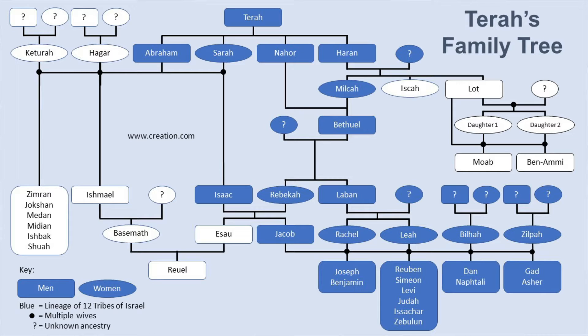Looking at the sons: Leah gives birth to Reuben, Simeon, Levi, Judah, Issachar, and Zebulun. Rachel, the favorite wife, gives birth to Joseph, the favorite son, and then Benjamin. Bilhah gives birth to Dan and Naphtali. And Zilpah gives birth to Gad and Asher.